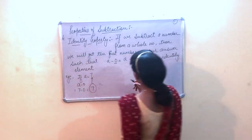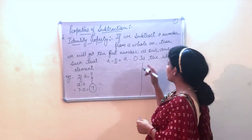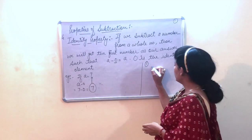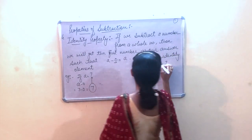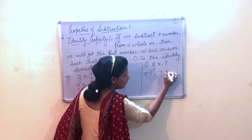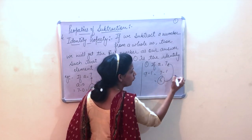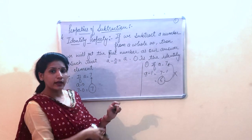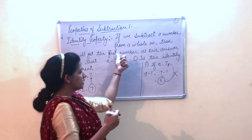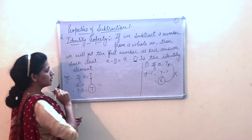If we tried any other element, such as 1, as the identity element, then with a equal to 7: a minus 1 equals 7 minus 1 equals 6. But 6 is not the value of a, so 1 cannot be the identity element for subtraction. Therefore, the identity element for subtraction is 0.